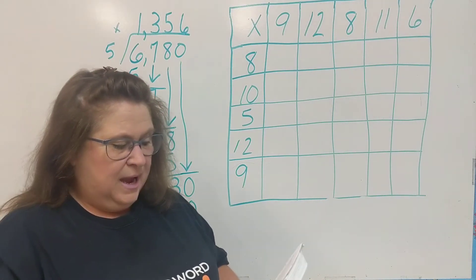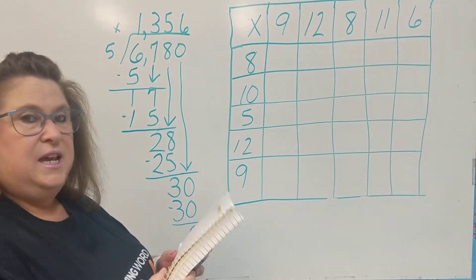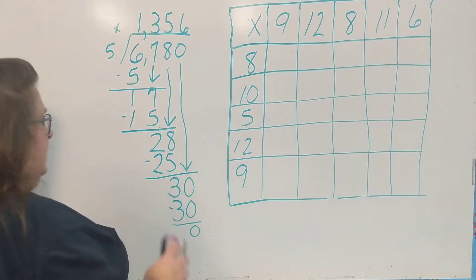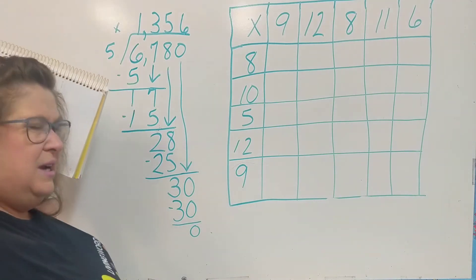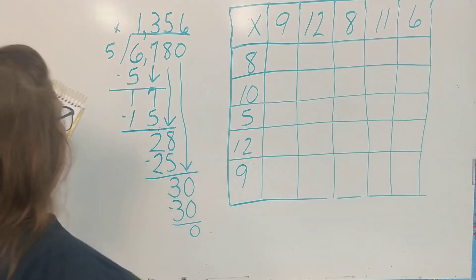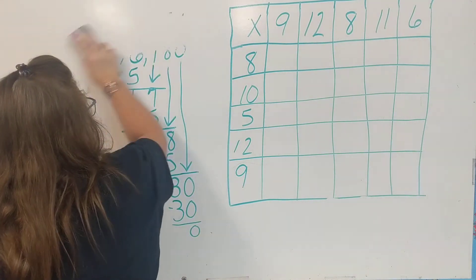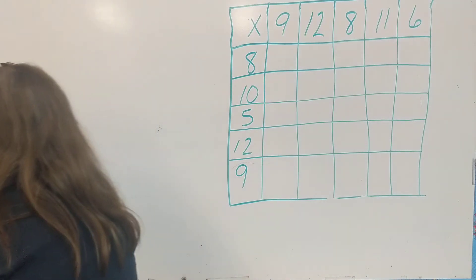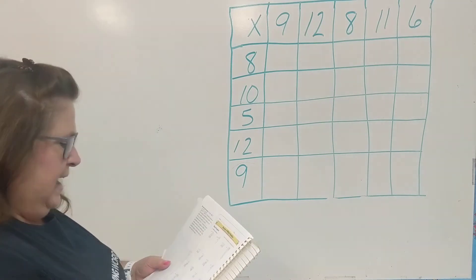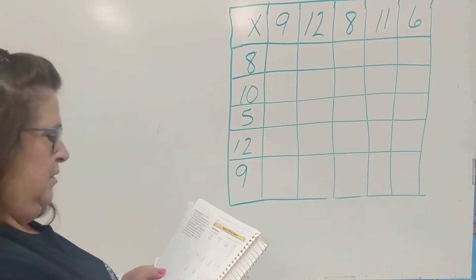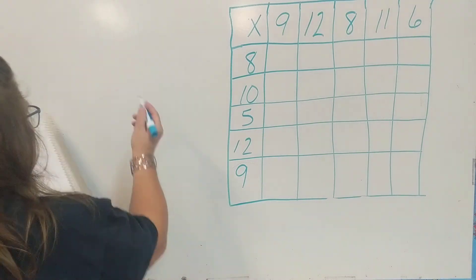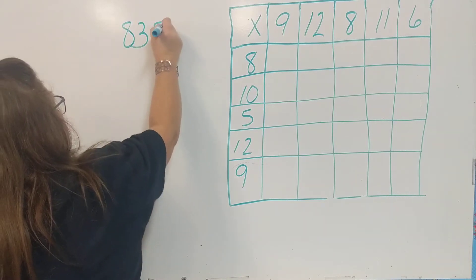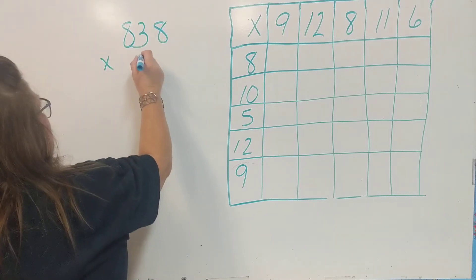All right, go ahead and look at letter G. If you need to pause the video and finish up that problem or look at it and study it, you may do so. We're going to go on. All right, page 11, letter G. Here we go — 838 times 97.